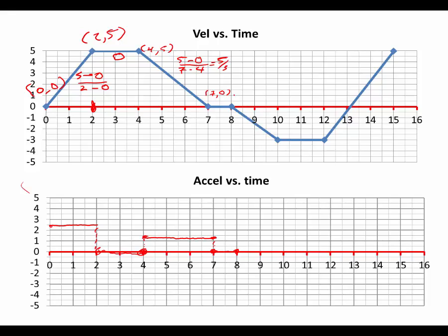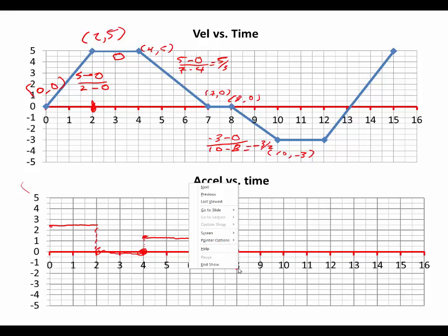From 8 to 9, we start at the point. We're going to 10, negative 3. So negative 3 minus 0 over 10 minus 8, which gives us negative 3 halves. So from 8 to 10, we'll be down at 1 and 1 half, negative.